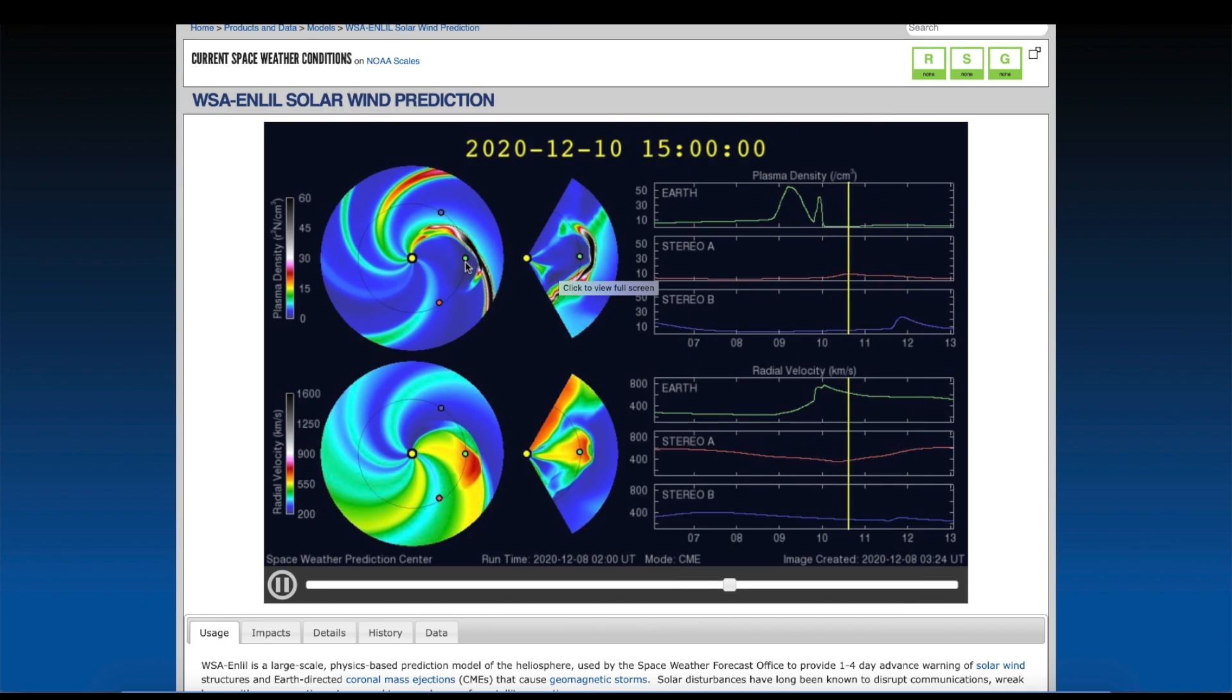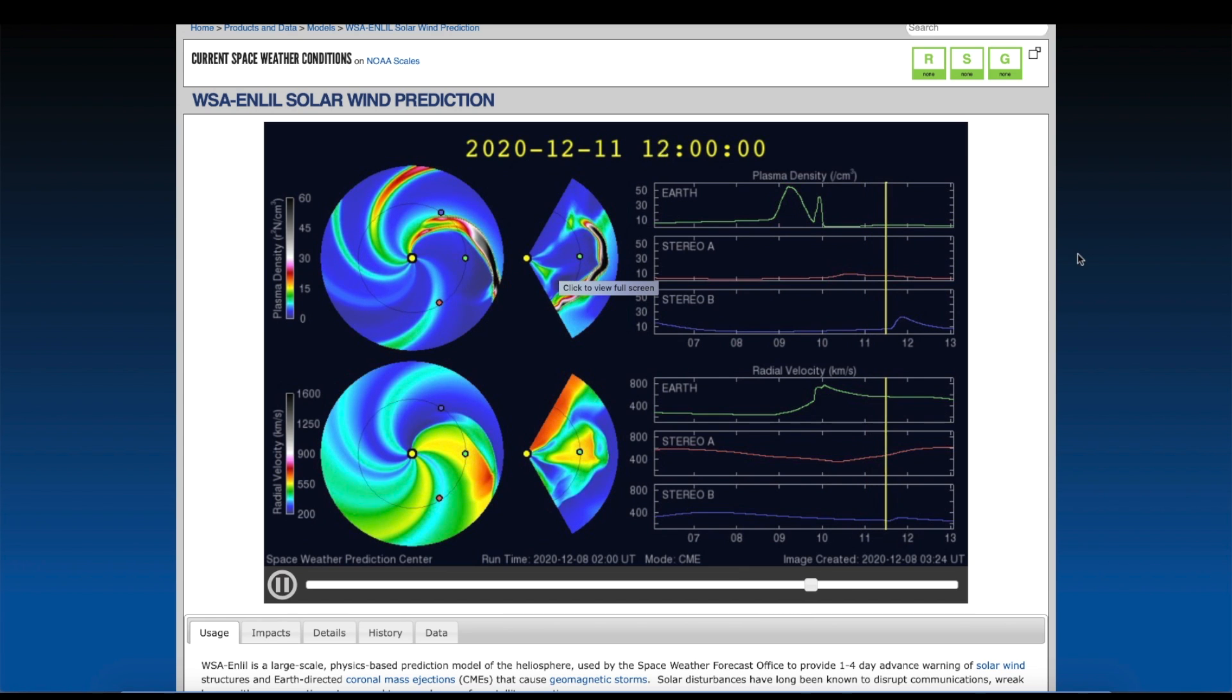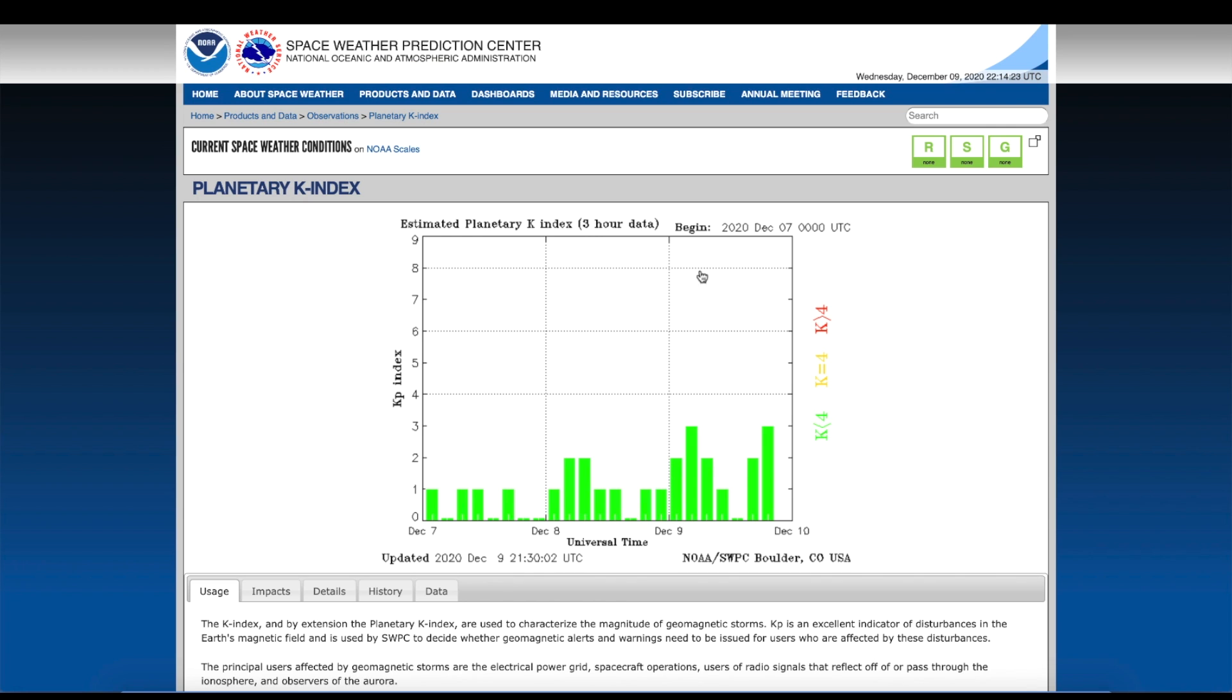That should be arriving literally any hour. Once it does, we're going to see a big change in the estimated planetary K-index. We will see some type of geomagnetic storm, whether it be a K3, maybe a K2. Could even possibly be stronger.